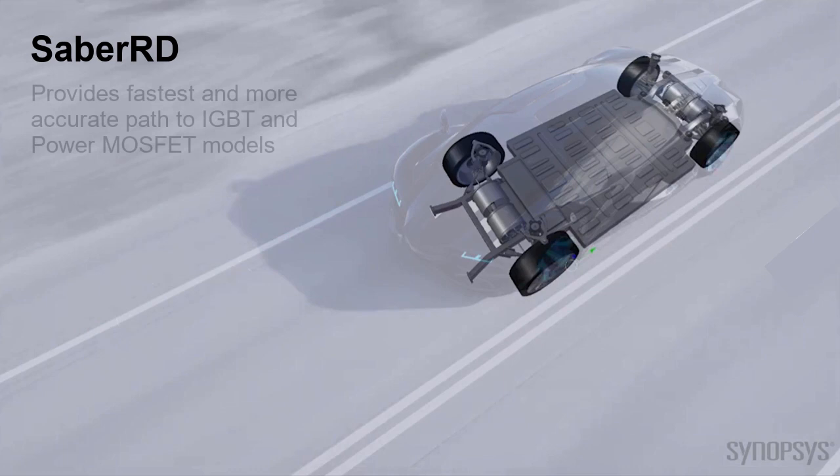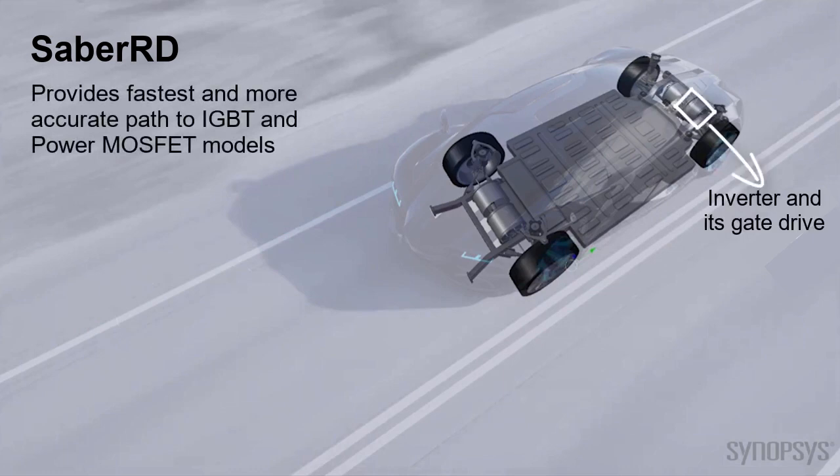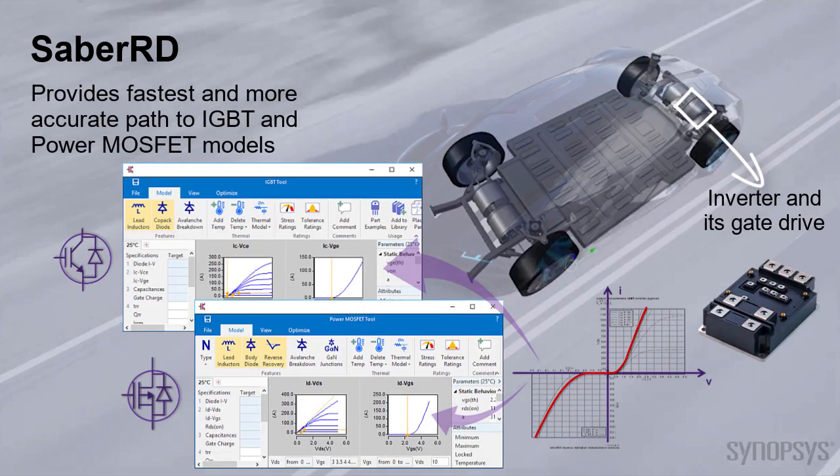Sabre RD provides fastest path to model high-fidelity IGBTs and power MOSFETs using characterization tools. These characterization tools use manufacturer's data sheet or measurement curves to generate high-fidelity models.